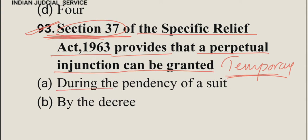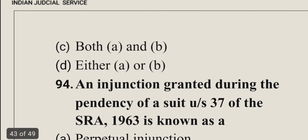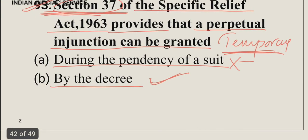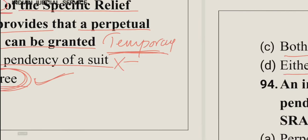A temporary injunction is granted during the pendency of a suit — that statement about it being provided only by decree is wrong. A perpetual injunction, however, is granted by decree, and that statement is absolutely correct. Option C is both A and B, option D is either A or B. The correct answer is option B — by decree. This is very important.